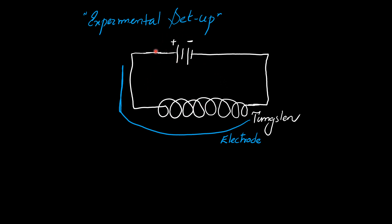By application of a high voltage in the electron gun, the tungsten filament provides heat to the metallic electrode. This metallic electrode, in the Davison and Germer experiment, was made up of barium oxide, whose work function phi is very low. So it will easily liberate electrons. Whenever this tungsten filament is heated, the heat, due to thermionic emission, causes emission of electrons from the barium oxide.